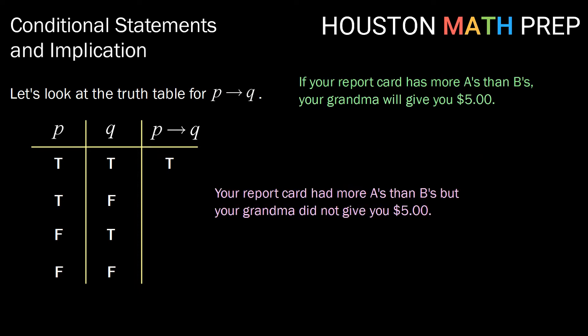In our next case, true, false: your report card had more A's than B's, but your grandma did not give you $5. In this case, the promise that grandma made was broken. So we would give this a false truth value.